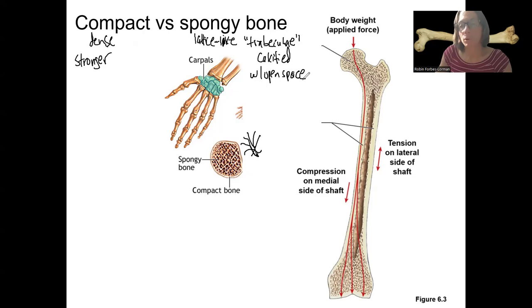Spongy bone is still very strong. And it can withstand force in many different directions. So it's good for, for example, short bones like these cube-like ones where you might have force equally likely applied in any direction. It's going to allow for that kind of like dense, irregular connective tissue. It's going to be just as strong.